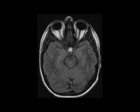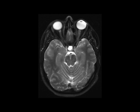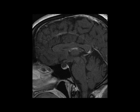Rathke's cleft cysts arise as a remnant of Rathke's pouch. A Rathke's cleft cyst is a benign lesion which may or may not contain mucin. The differential includes craniopharyngioma and pars intermedia cyst. Signal intensity within a Rathke's cleft cyst can be variable in both the T1 and T2-weighted sequences depending on the internal contents.